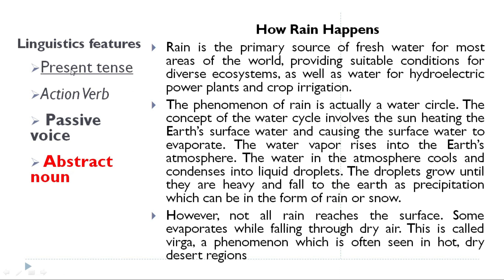Regarding the linguistic features, the text uses present tense, action verbs, passive voice, and abstract nouns. For example, 'This is called' and 'which is often seen' are examples of passive voice. 'Phenomenon' and 'diverse ecosystem' are examples of abstract nouns — you cannot physically touch them, which is why they are called abstract nouns.